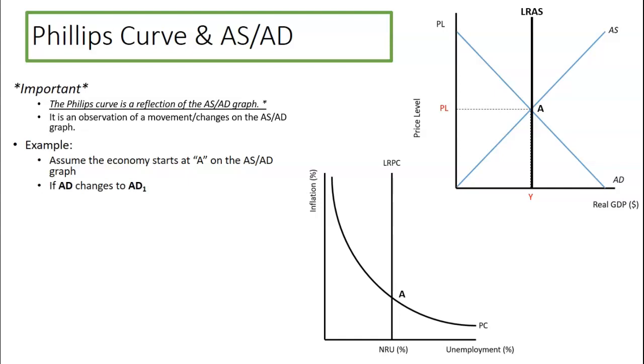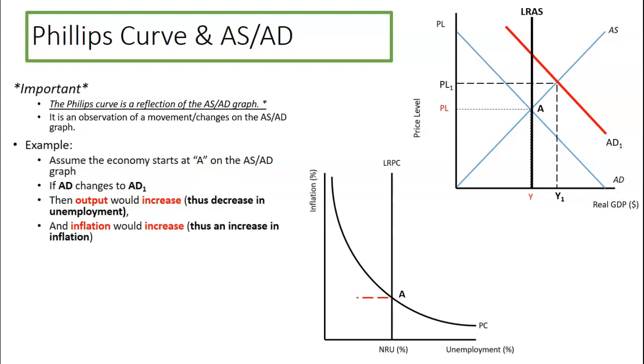For whatever reason, AD changes to AD1. Okay, we notice we go from PL to PL1. We go from Y to Y1. So the output increases. The real output increases. Well, we can see unemployment rate typically decreases. Okay, what else happened? We went from PL to PL1. So inflation occurred. So now we're both at point B on the graph.